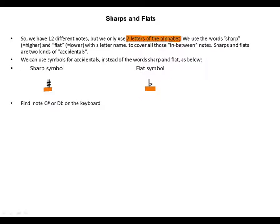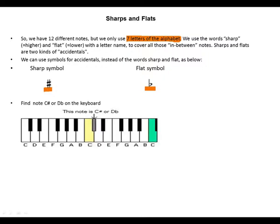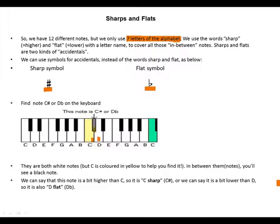Find C sharp or D flat on the keyboard. We have C, the black note above the C is C sharp. We have D, the black note above D is D flat. They are both white notes, but C is colored in yellow to help you find it. In between the notes, you'll see a black note.